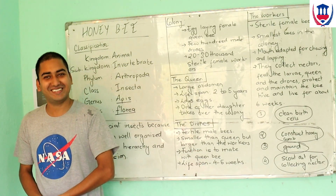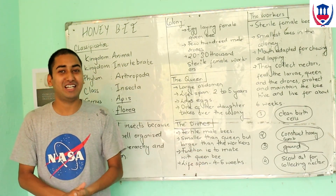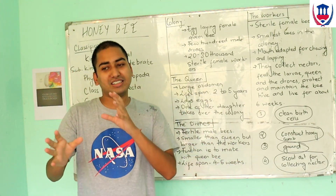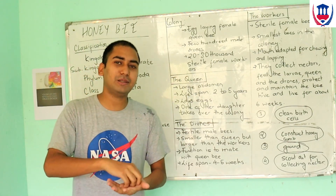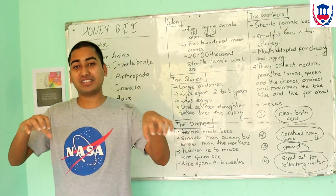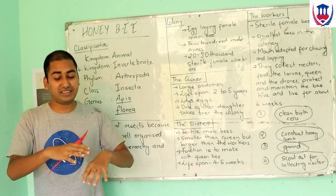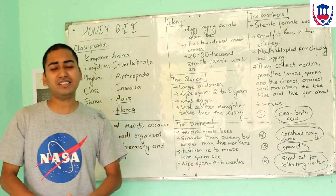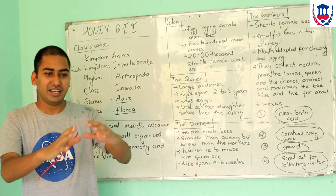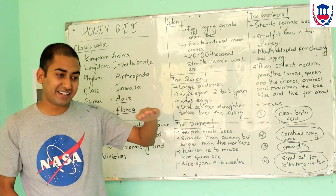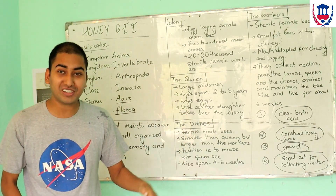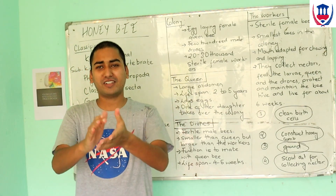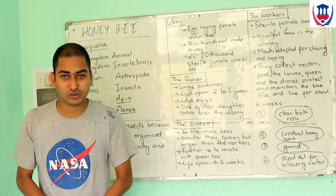They have both hierarchical systems and members who can grow. They also have both relationships and work divisions. So we can take a look at them as social insects.